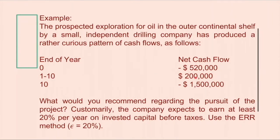And at the end of year 10, we have negative $1,500,000. What would you recommend regarding the pursuit of the project? Customarily, the company expects to earn at least 20% per year on invested capital before taxes. Use the ERR method.